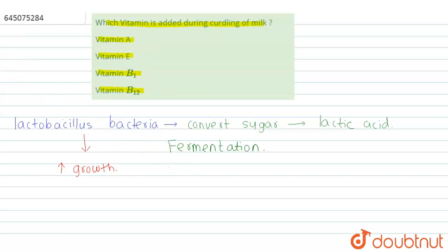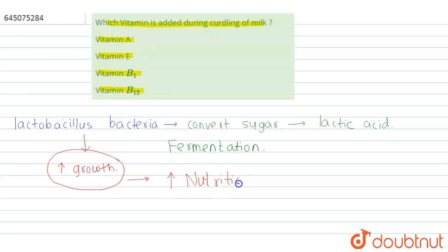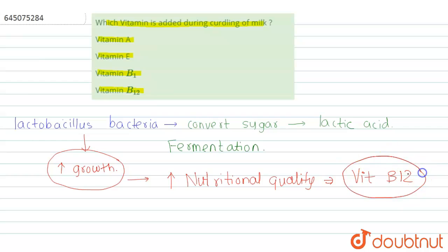This leads to curdling of milk, and along with curdling, the nutritional quality of the curd also increases. This happens because during curdling, Vitamin B12 is added into the milk. So the answer is Vitamin B12 — it is added during curdling of milk and increases the nutritional quality of the curd.